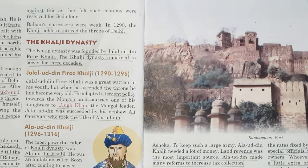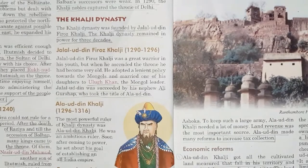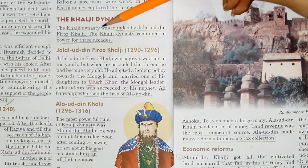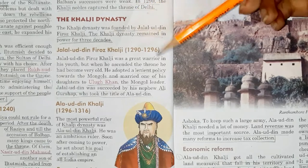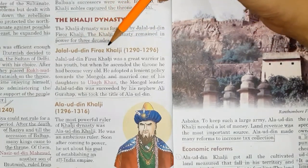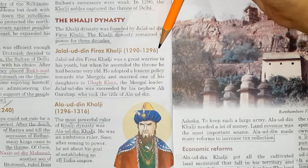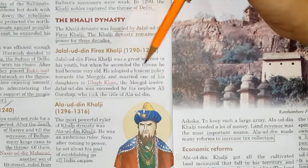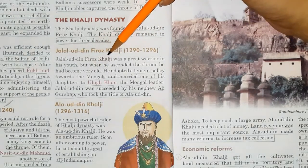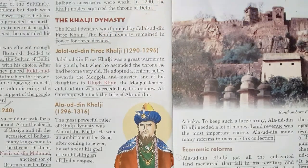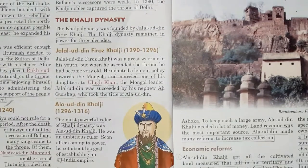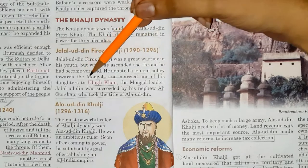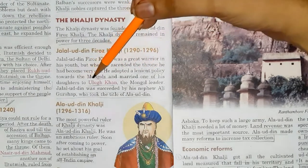Coming to the Khilji Dynasty — it was founded by Jalaluddin Feroz Khilji. The Khilji Dynasty remained in power for three decades, that is 30 years. Jalaluddin Feroz Khilji ruled from 1290 to 1296. He was a great warrior in his youth, but when he ascended the throne he had become very old. He adopted a lenient policy towards the Mongols and married one of his daughters to Uluk Khan.